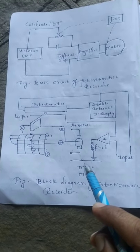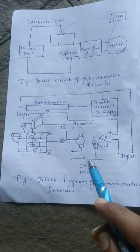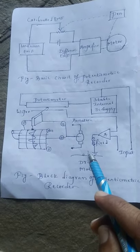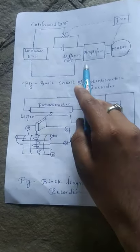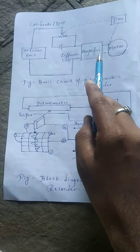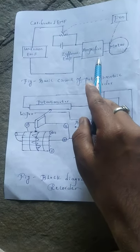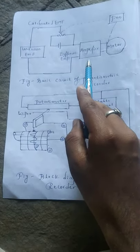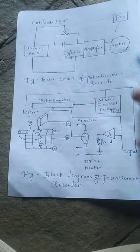First point: the input signal is compared with reference voltage using potentiometric circuit. Second point: the difference between them is the error signal, which is amplified and is used to energize the field coil of DC motor.